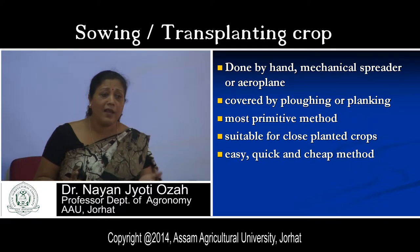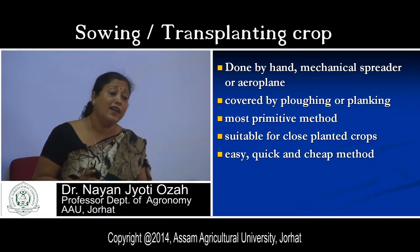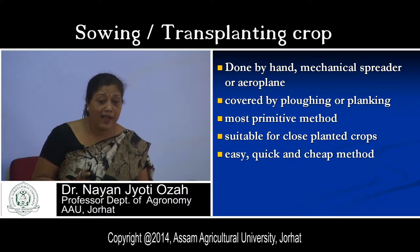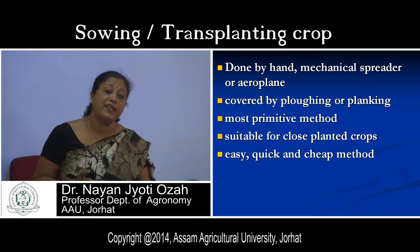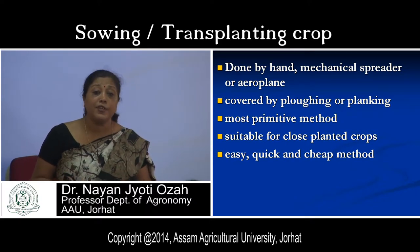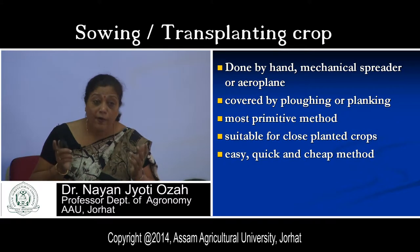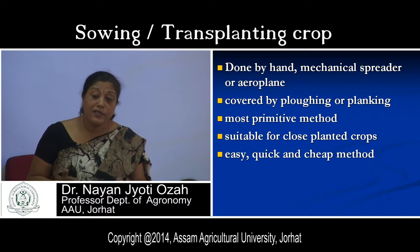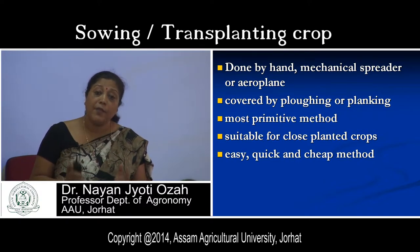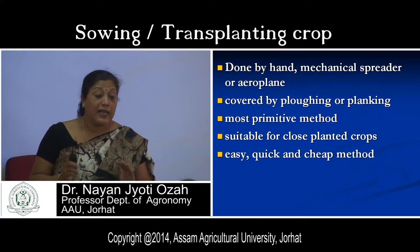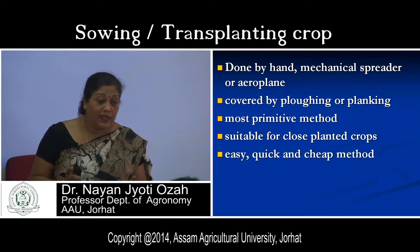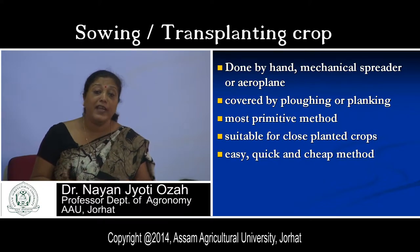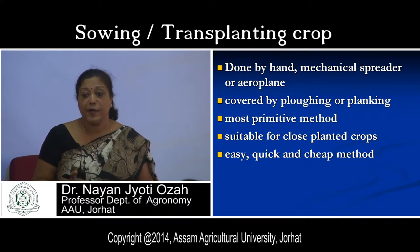Even though farmers follow the broadcasting method because it is very cheap, less costly, and requires less time, there are many disadvantages. Key points for broadcasting: it is done in dry, semi-dry, and wet fields; seeds may be covered by plowing or planking; it is the most primitive method; it is easy, quick, and cheap — no know-how required; this practice can be done within a short period of time with no cost involvement other than seeds.